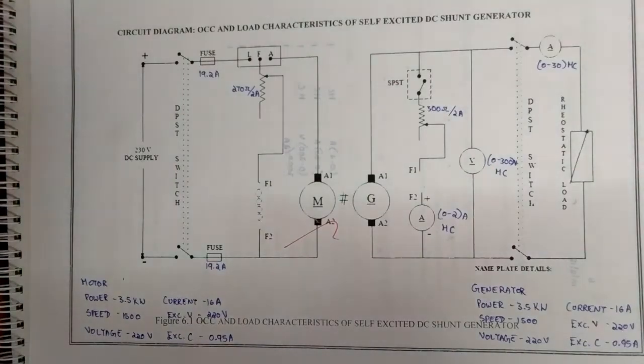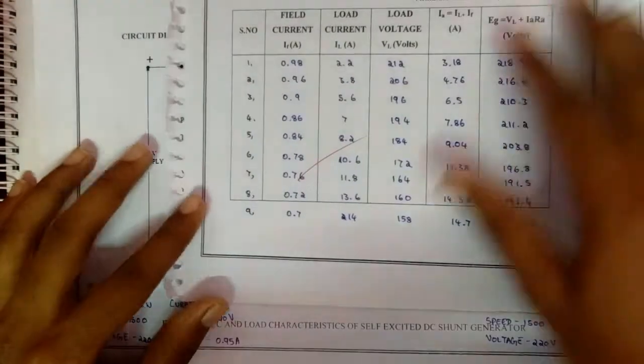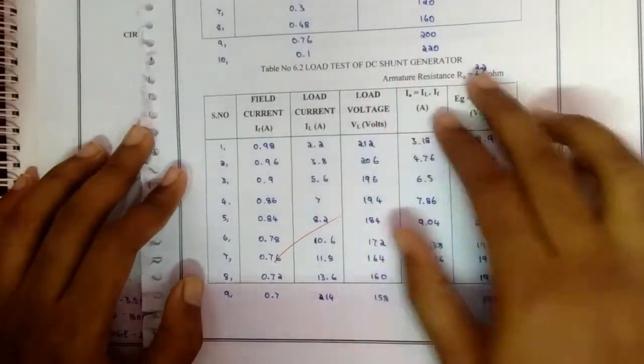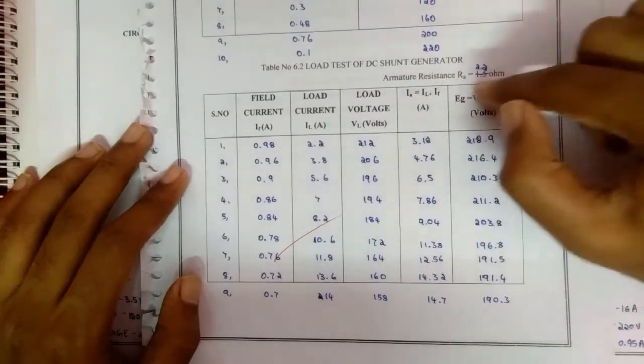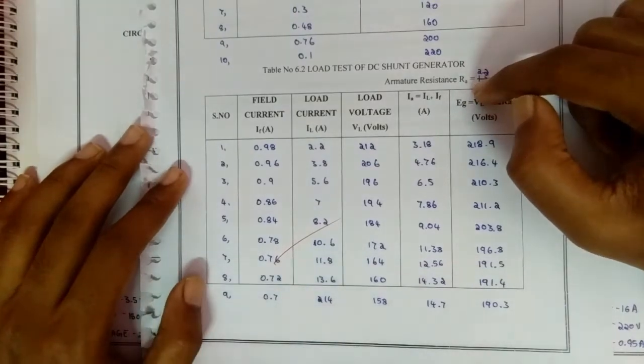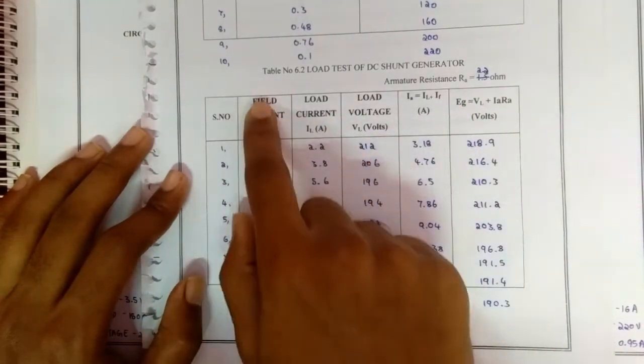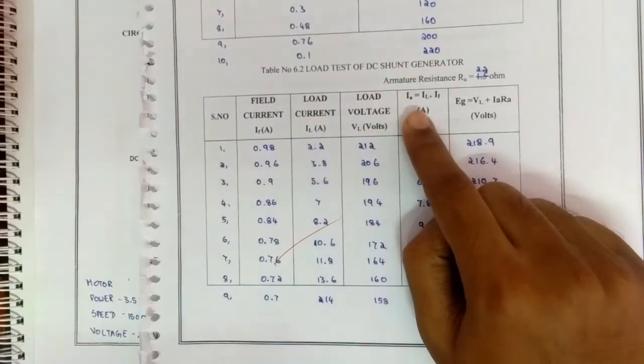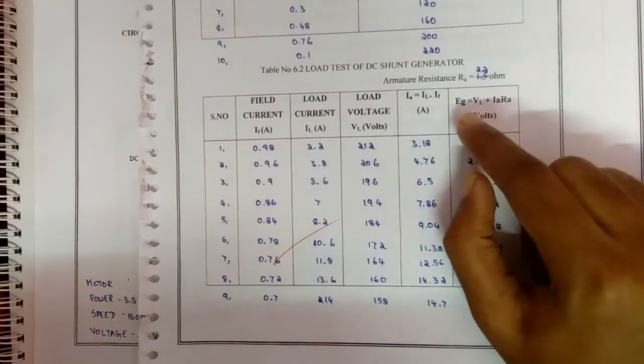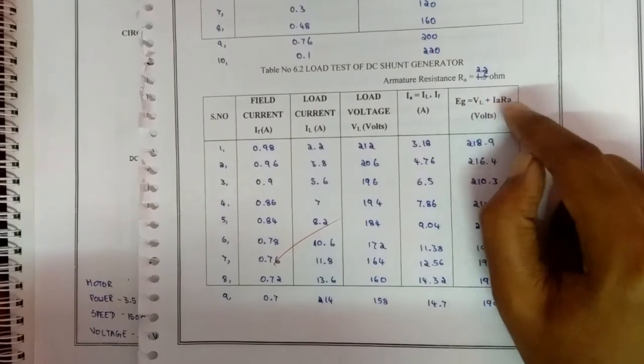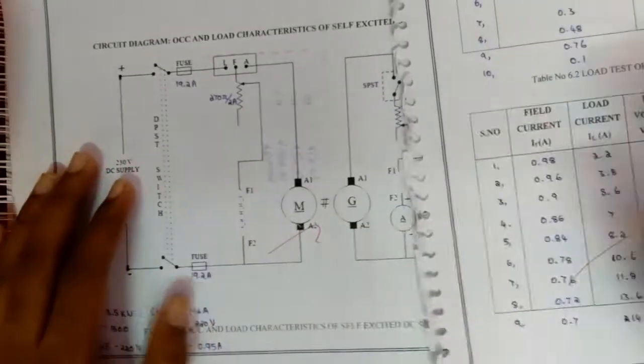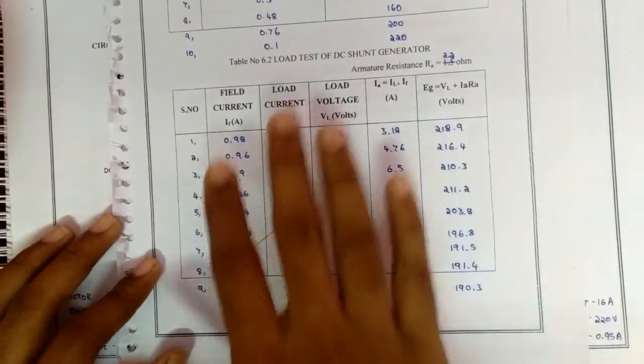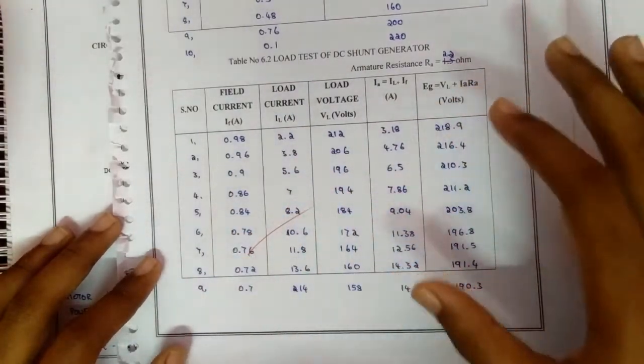The tabulation for the load test shows field current and voltage VL. I have calculated the resistance value using the multimeter. The tabulation columns will be field current, load current, load voltage, and armature current IA = IL + IF, and EG = VL + IA*RA. EG is the generated voltage. With this formula and these values we can find the value of EG.